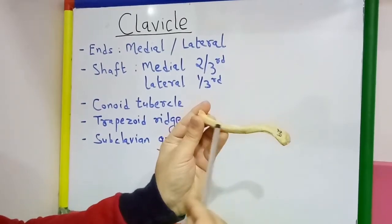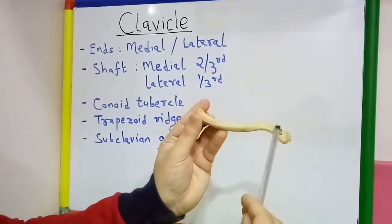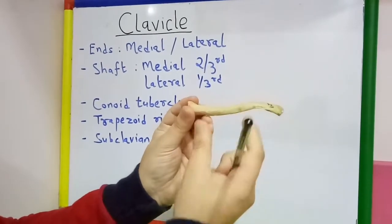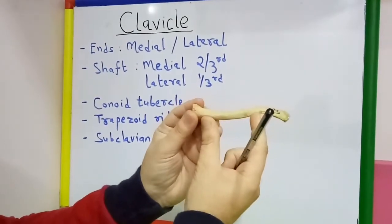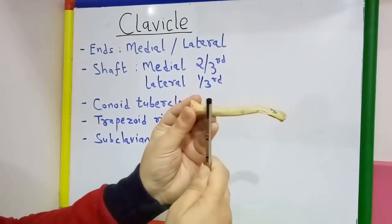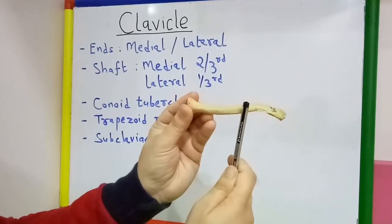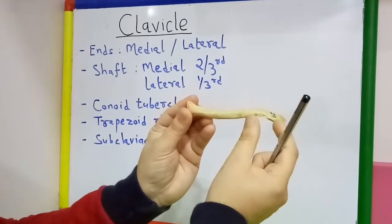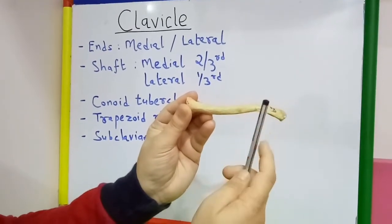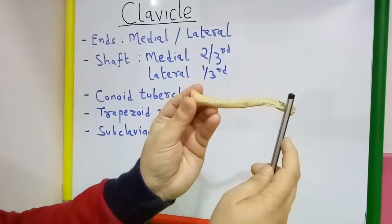This is the shaft which is curved, so that in the medial two-third it is convex forward, and in its lateral one-third it is concave forward.